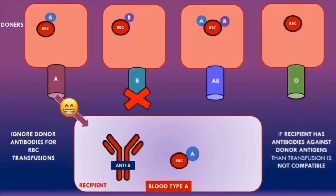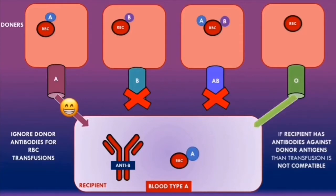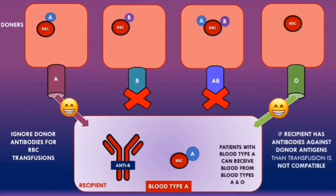If the recipient receives blood type AB, this transfusion is also not compatible because the donor red blood cells contain B antigens, so the anti-B antibodies will react with them. If the recipient receives O blood, this transfusion is compatible because the donor red blood cells have no antigens, so there are no B antigens for the anti-B antibodies to react with. In summary, patients with blood type A can receive blood from blood types A and O.